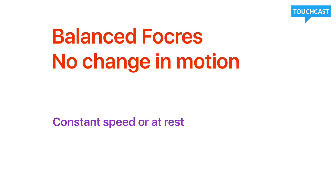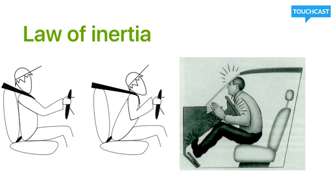That bridges into Newton's three laws. We're going to start off by looking at his first law, also called the law of inertia. It states objects at rest stay at rest, or objects in motion will stay in motion until an unbalanced force stops them or causes them to move.